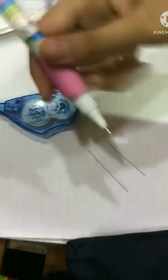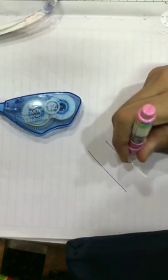First, I have drawn two lines here. Now I'll shake the whitener a little bit and apply it on this line.